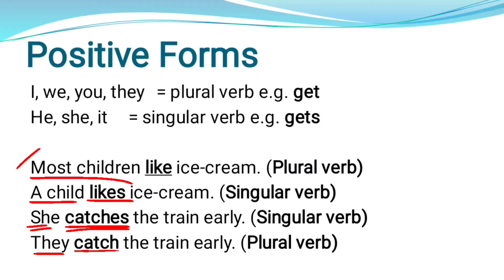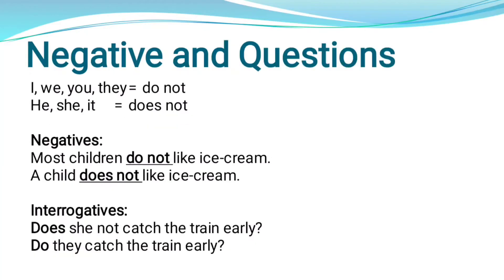When we have a negative or interrogative sentence, we use 'do not' and 'does not' as helping verbs. For example: 'Most children do not like ice cream.' For interrogative: 'Does she not catch the train?' or 'Does she catch the train?' or 'Do they catch the train early?' This is a routine action.